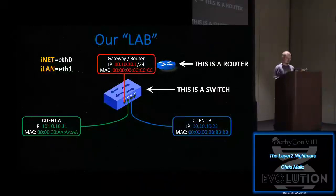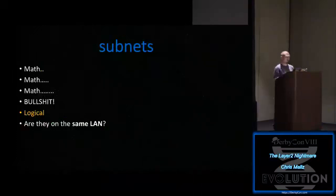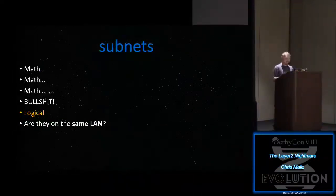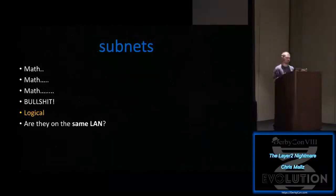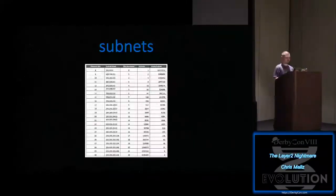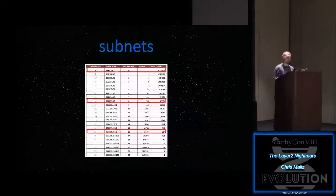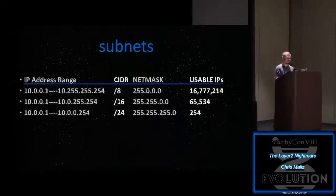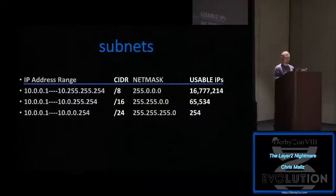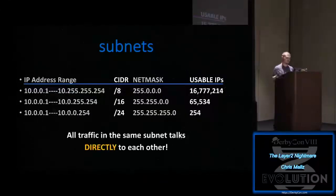Let's start with subnets. When you do Networking 101 it's all math, and honestly we all look it up — I've used a subnet calculator plenty of times. The subnet table is here, but essentially all we really care about are three subnets: your slash eight, your slash sixteen, and your slash twenty-four. But that doesn't really tell us what subnets are — basically anything within a subnet talks directly to one another.